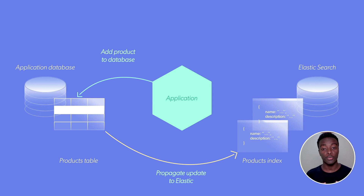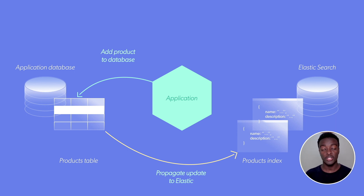A popular way to achieve this is using the change data capture pattern. The industry standard for implementing this is called Debezium, which is built on top of Apache Kafka. We are looking to extend the Prisma data platform to support this pattern in a way that is optimized for serverless applications while still being compatible with industry standards.